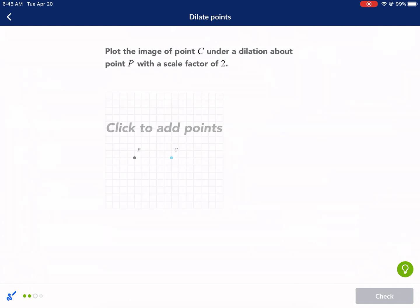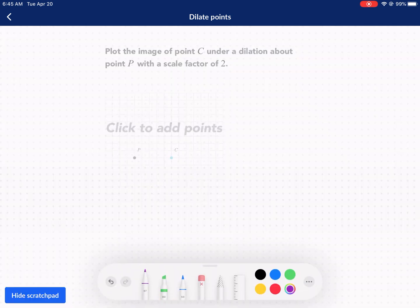Next problem, plot the image of C under dilation about point P with a scale factor of two. Okay. Now, we said this earlier, but if we have a scale factor that's bigger than one, then that means it's going to be growth. So, this case is going to be growth. It's going to move further away from P. Think about if this is our center. If this is our center, a growth would go this way, and a shrink would go this way, towards the center. Think about it as like a well of gravity. It either pulls you in for a shrink or pushes you out for a growth. In this case, we're doing a scale factor of two, and so we need to calculate the distance.